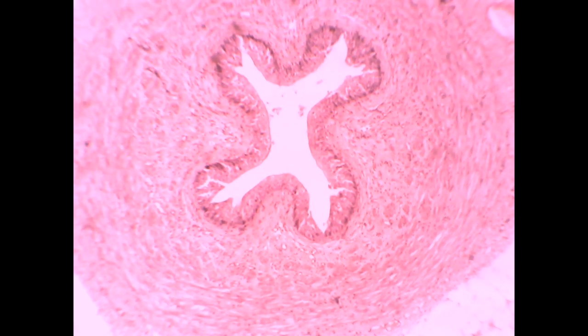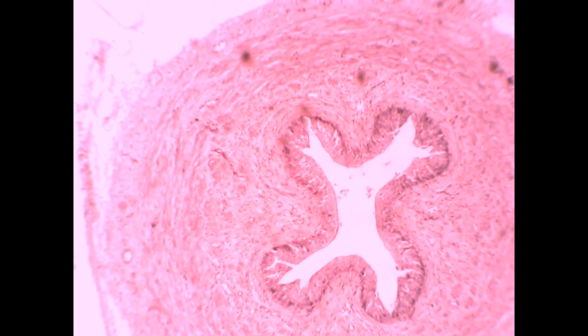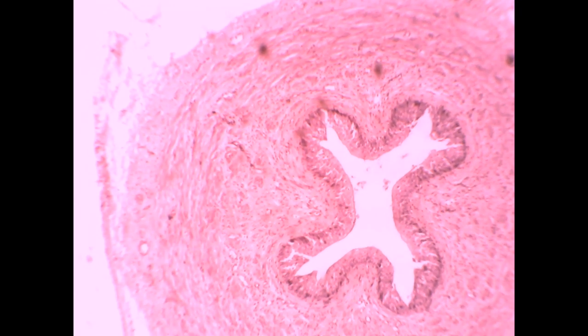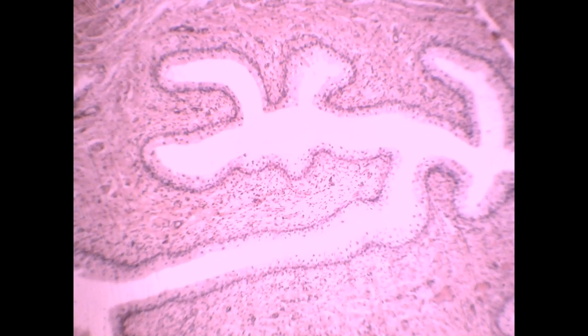Small hollow organ with stellate or star-shaped lumen, lining epithelium is transitional, submucosa narrow, and the muscle is not well developed, or the submucosa is evident here before the muscle.